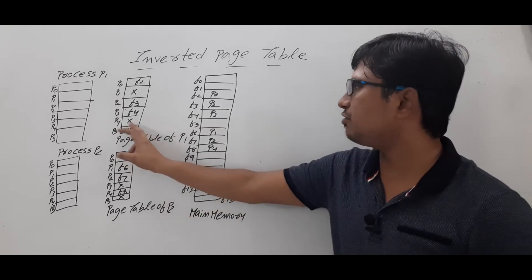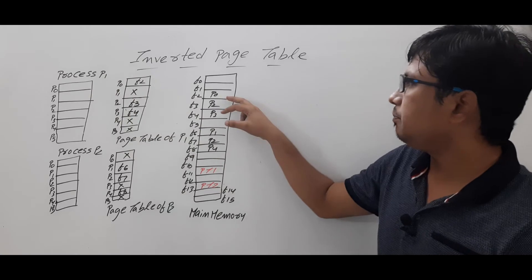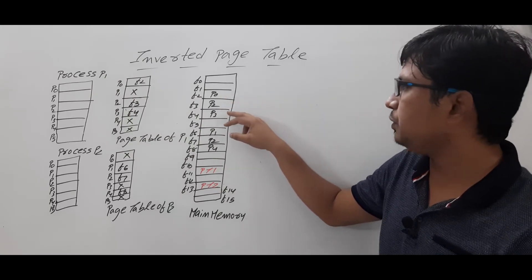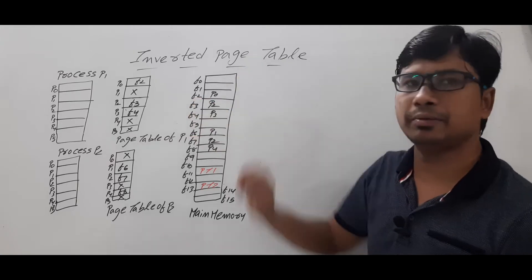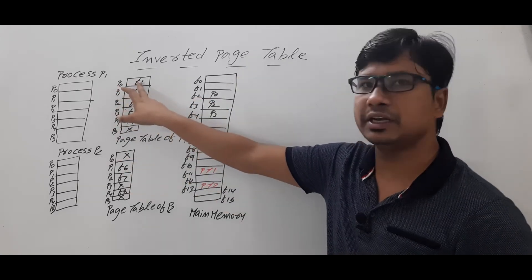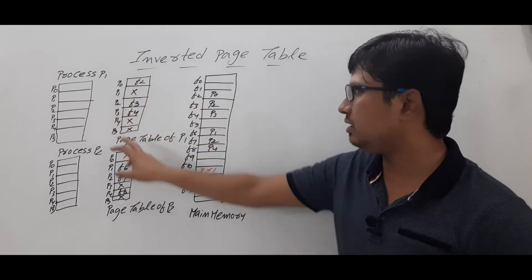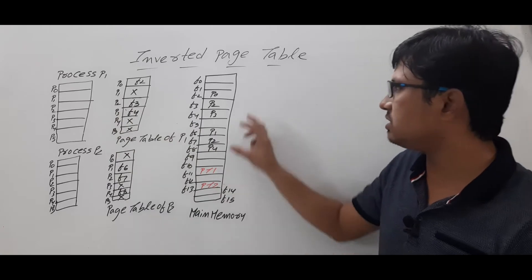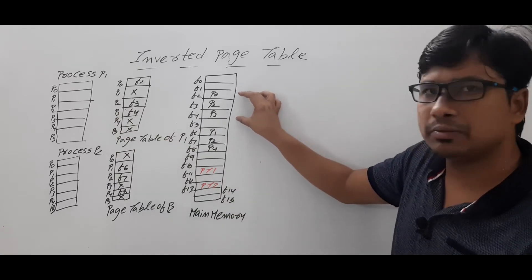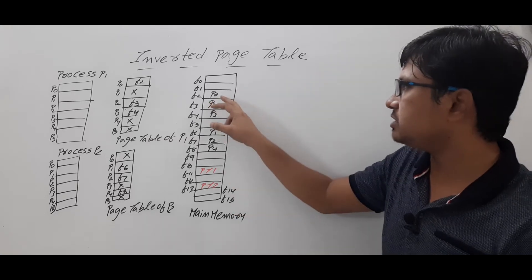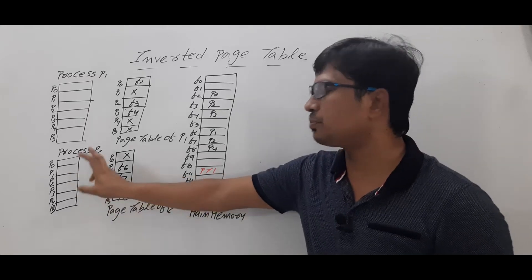Each process will maintain its own page table. The process P1 pages P0, P2, and P3 are stored in frame number two, frame number three, and frame number four respectively. Page number zero is stored in frame two, page number two in frame three, and page number three in frame four, because it is a non-contiguous memory allocation — memory is allocated wherever free frames are available.